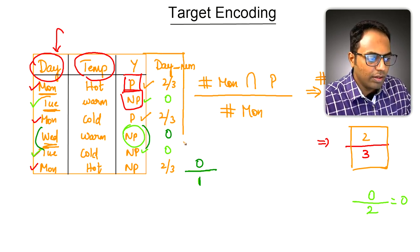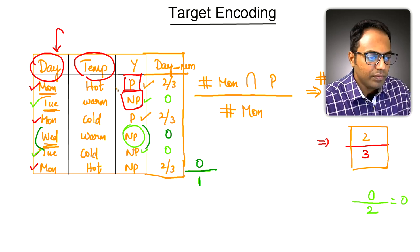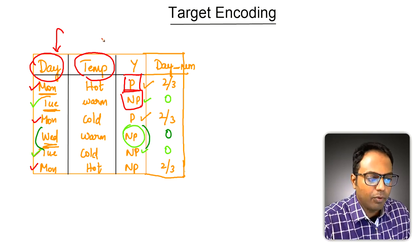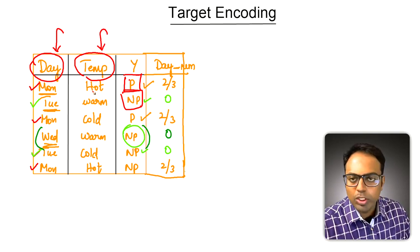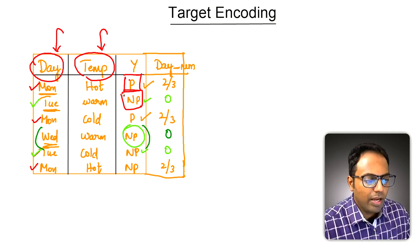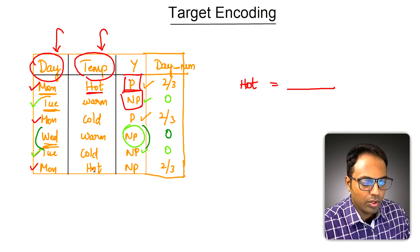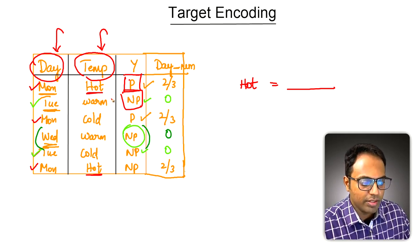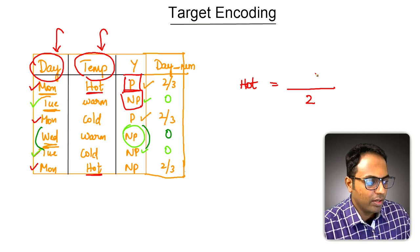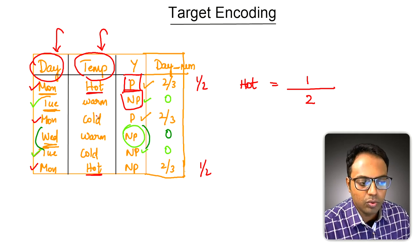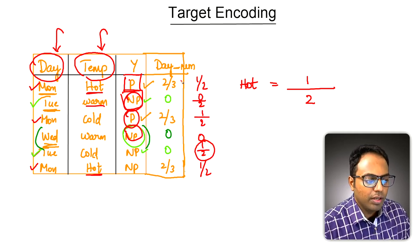This is the numeric equivalent for the day column. Likewise for the temp column, we have three possible values: hot, warm, and cold. For hot, the denominator is two occurrences, and out of those two only one instance shows 'played', so the value is 1/2. Wherever hot appears we write 1/2. We do the same for warm and cold.